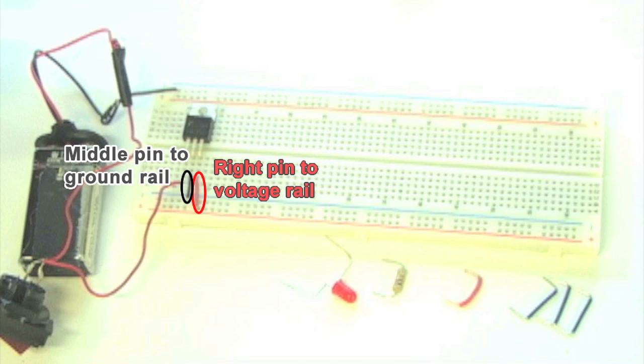Now the middle pin of the 7805 goes to ground and the right pin to our voltage rail. The potential between our voltage and ground rails is now 5 volts.